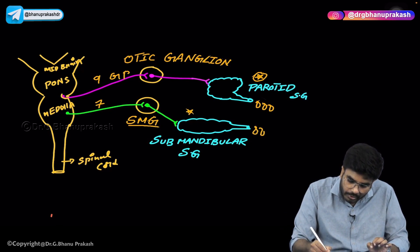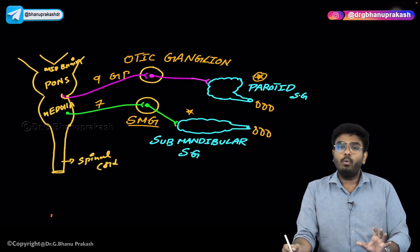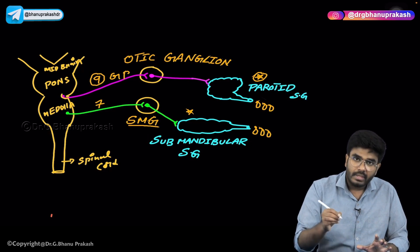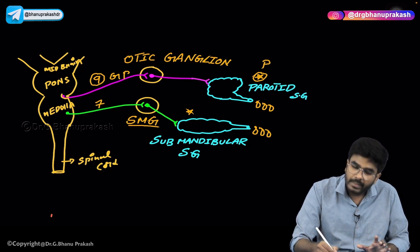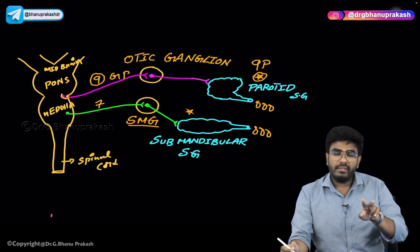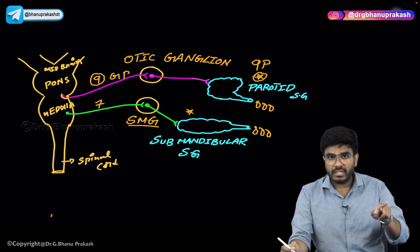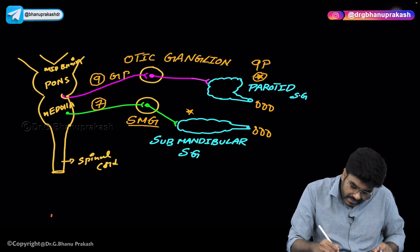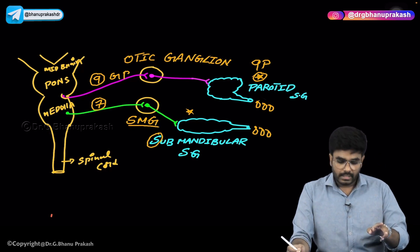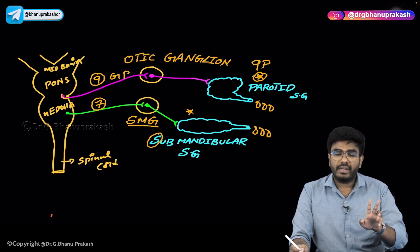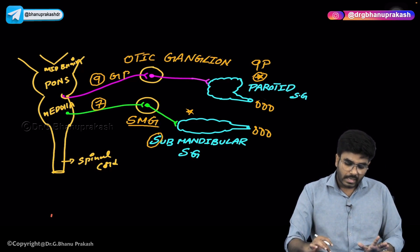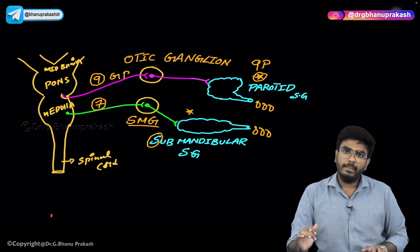A mnemonic to remember: if you reverse the number nine, it looks like the letter P — so the ninth cranial nerve gives parasympathetic innervation to the parotid gland. And seven is for submandibular glands — the seventh cranial nerve innervates the submandibular gland, which then produces secretions. This is the nerve supply of the salivary glands.